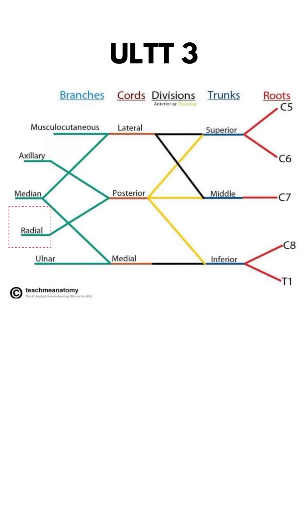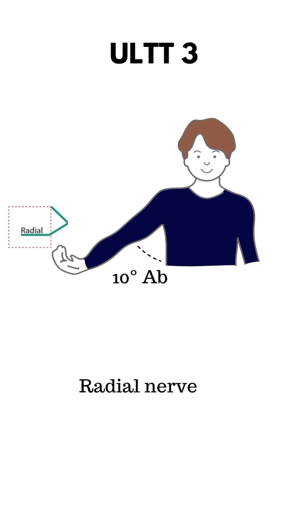For ULTT 3, it's R, Radial. If you look at the figure, it looks a bit like R. The arm is the body of R and the hand is the tail.